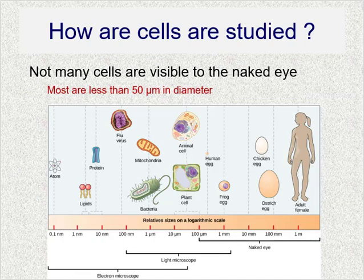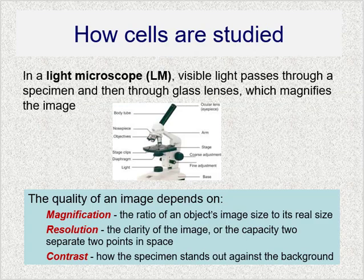Cells are extremely small — most are less than 50 micrometers in diameter, and very few are visible to the naked eye. So in order to look at cells, we have to use a microscope. The microscope you will see most often is called a light microscope, often abbreviated as LM. Light microscopes use visible light which passes through a specimen and then through a glass lens, which magnifies the image and allows you to see it.